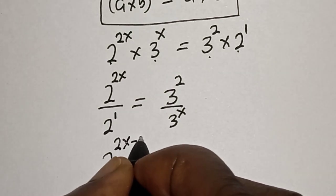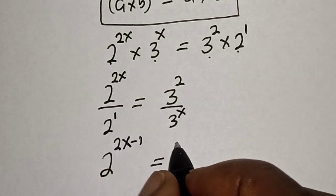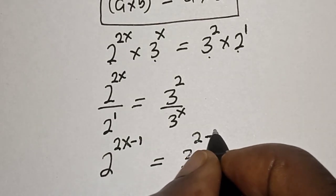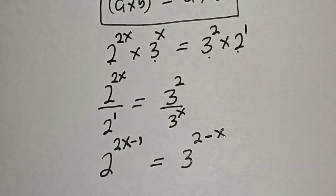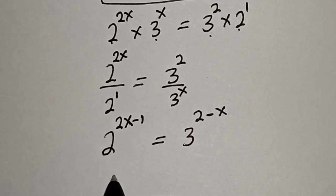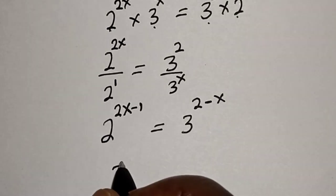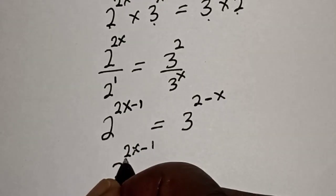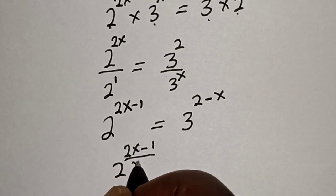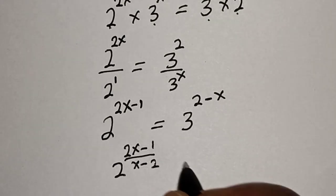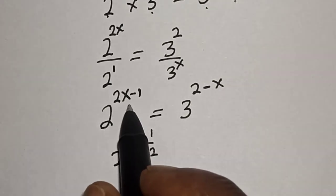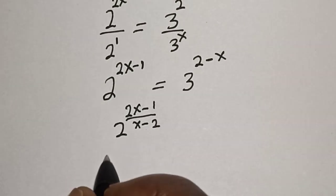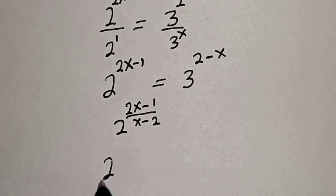So 2x minus 1 is equal to 3 raised to the power of 2 minus x. But our focus is to find the value of 2 to the power of 2x minus 1, over x minus 2. What we do is divide the exponent of both sides by x minus 2.